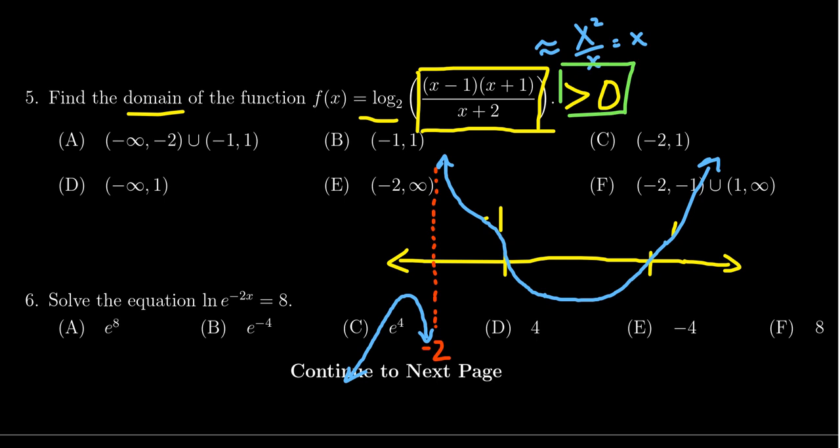Since our expression needs to be greater than zero, we're looking for things above the x-axis. So we're above the x-axis to the right of one. We're above the x-axis to the left of negative one, but to the right of negative two.